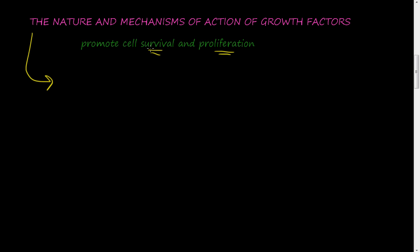If the growth factor is removed from a cell or if it's not stimulated, if growth factors aren't stimulating these cells, then these cells will undergo apoptosis. That's one of the reasons why apoptosis happens. Growth factors promote cell survival and they also promote cell proliferation or mitosis and dividing.